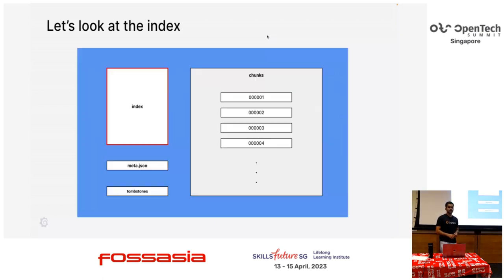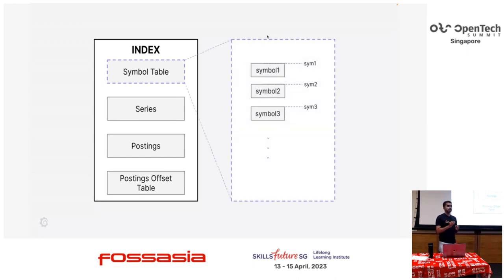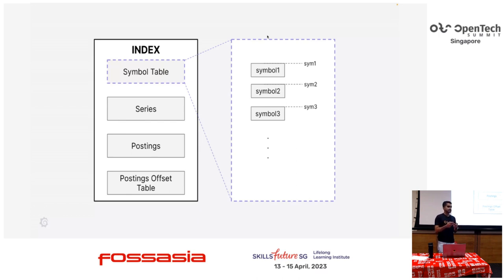The most interesting part is the index. Prometheus stores the index in something called an inverted index format, and we will see how it is stored and how it is queried. At a high level, the index has four components. First is the symbol table — the symbol table stores all the symbols, basically the strings that were seen in a time series. For example, if you had label name HTTP request total, that is a symbol; job equals nginx — then job is a symbol and nginx is a symbol. All the symbols are stored together in a single table. Because if you repeat all the symbols in the index everywhere, it takes a lot of space. You store them in a sorted table and just use their index number — the first symbol is number 1, the second is number 2 — and use those numbers everywhere in the index.